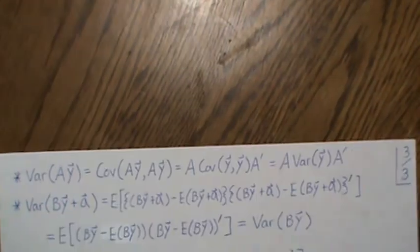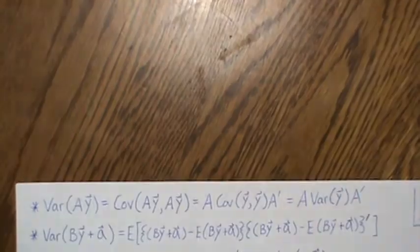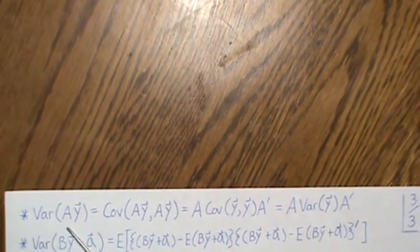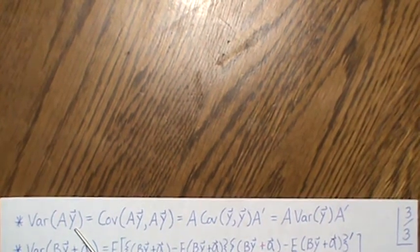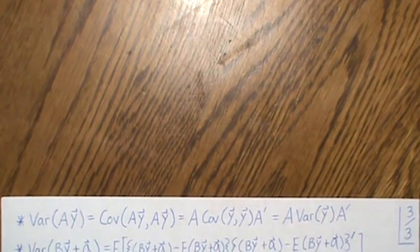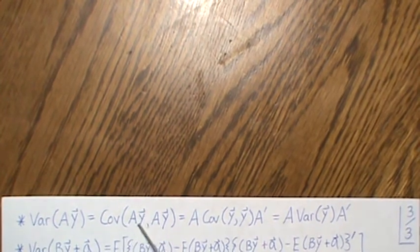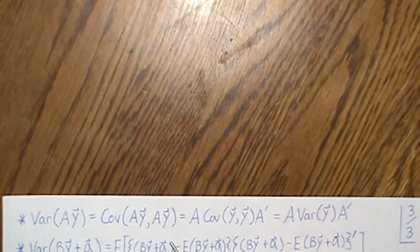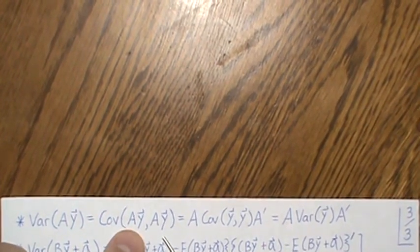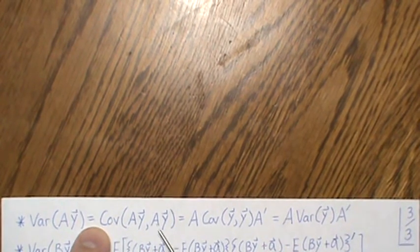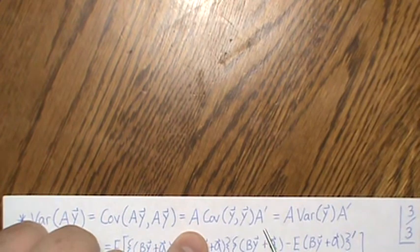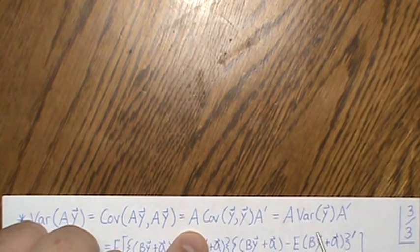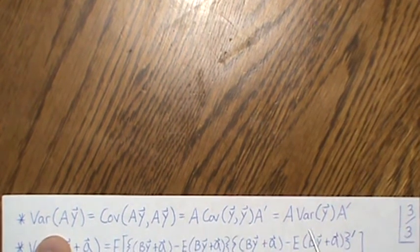For the variance of a constant times a random vector, it's easier to think of Var(ay) as Cov(ay, ay). Using the formula, a comes out front and aᵀ goes out back: Var(ay) = a · Var(y) · aᵀ. That formula is used quite a bit.